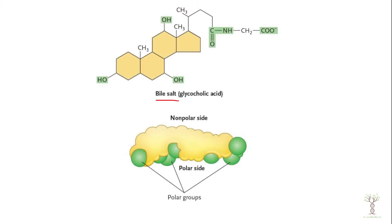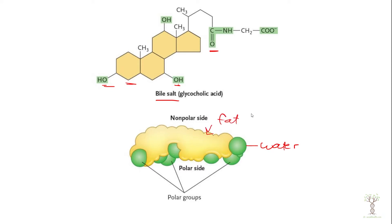We can see our cholesterol molecules have some parts with polar regions. Those polar molecules are going to be attracted to water, and the non-polar portion will be attracted to fat. Because bile has both polar and non-polar regions, it acts a little bit like soap and will help to emulsify fat droplets.